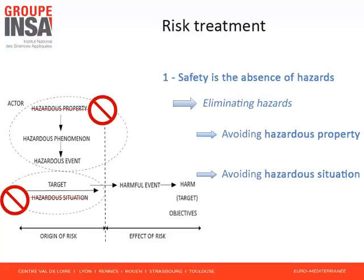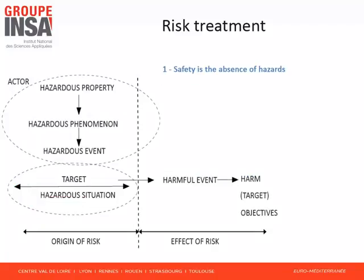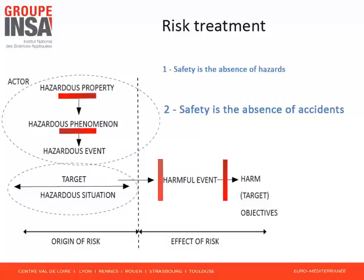For instance, a regulation may forbid the construction of chalets in an avalanche corridor. The second possible definition for safety is the absence of accidents. The previous risk controls are still valid, and others can be added. The associated risk treatments will avoid the causal relationships as presented in the figure. For instance, barriers are built on mountain sides to stop the progression of an avalanche — this avoids the occurrence of harmful events. This introduction to risk treatment highlights the importance of the risk identification model, since the proposed risk controls aim to avoid the occurrence of model features, such as a hazardous property or the propagation of a causal relationship.